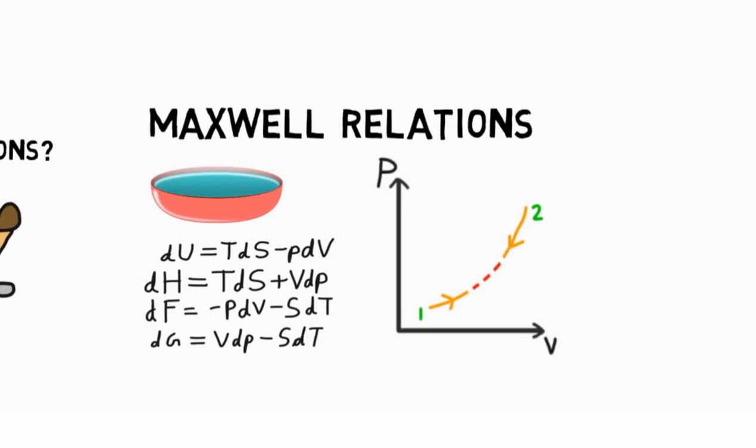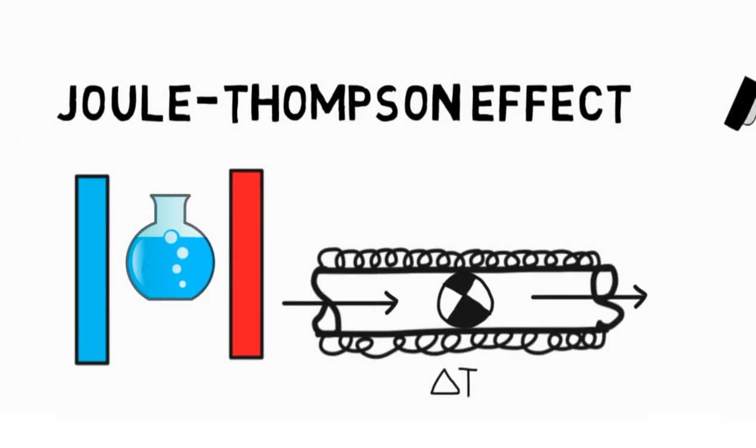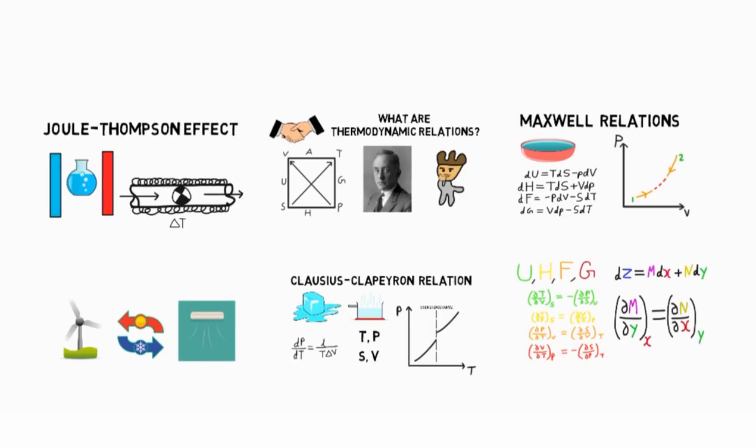Hence, we learned about what the thermodynamic relations are, then moved on to the Clausius Clapeyron relation, and finally saw what the Joule-Thompson effect is.